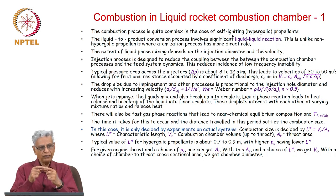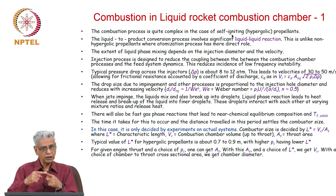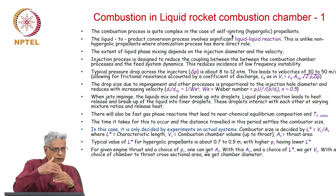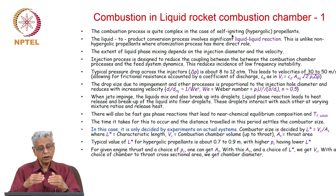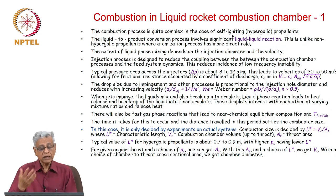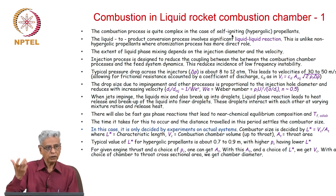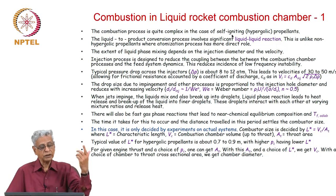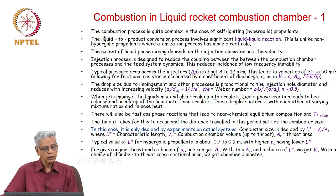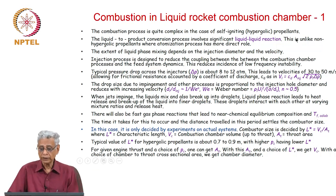You have the fuel elements which impinge on each other and oxidizer elements which impinge on one another. It is the droplets and secondary atomization processes which bring fuel and oxidizer together. If you bring fuel and oxidizer together in the primary mode — meaning you impinge one over the other — the heat release rates are very large and the combustion process gets completed very fast. The liquid-to-product combustion process involves liquid-liquid reactions in a hypergolic system.